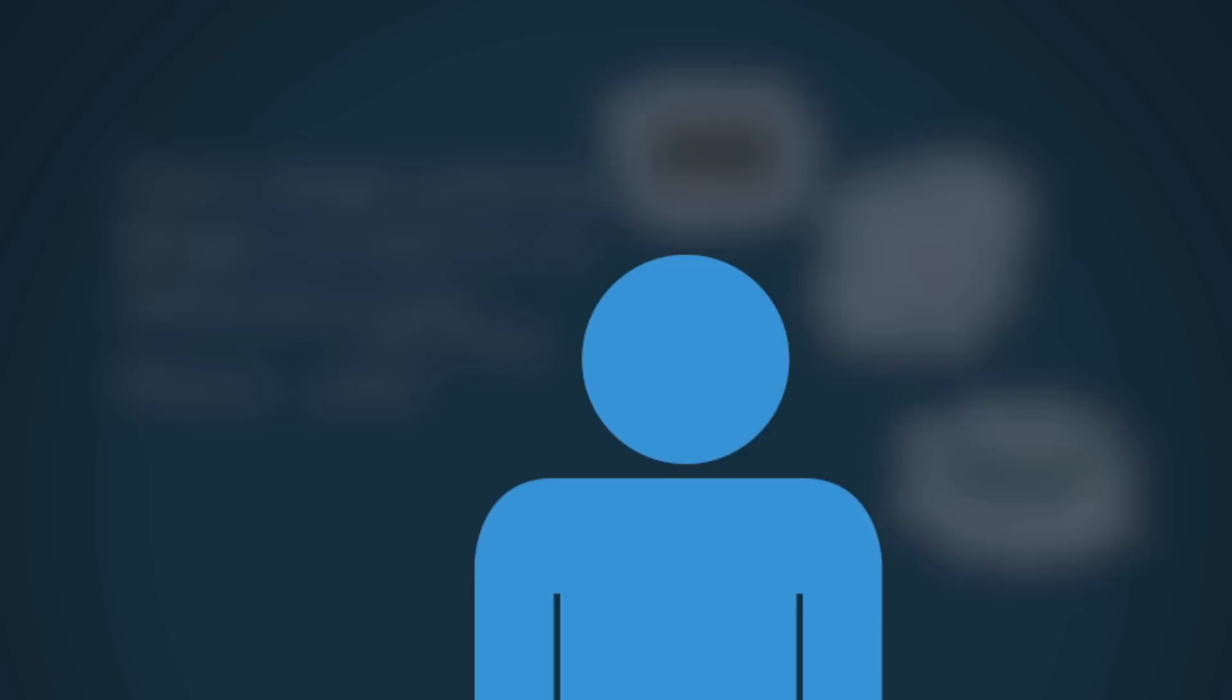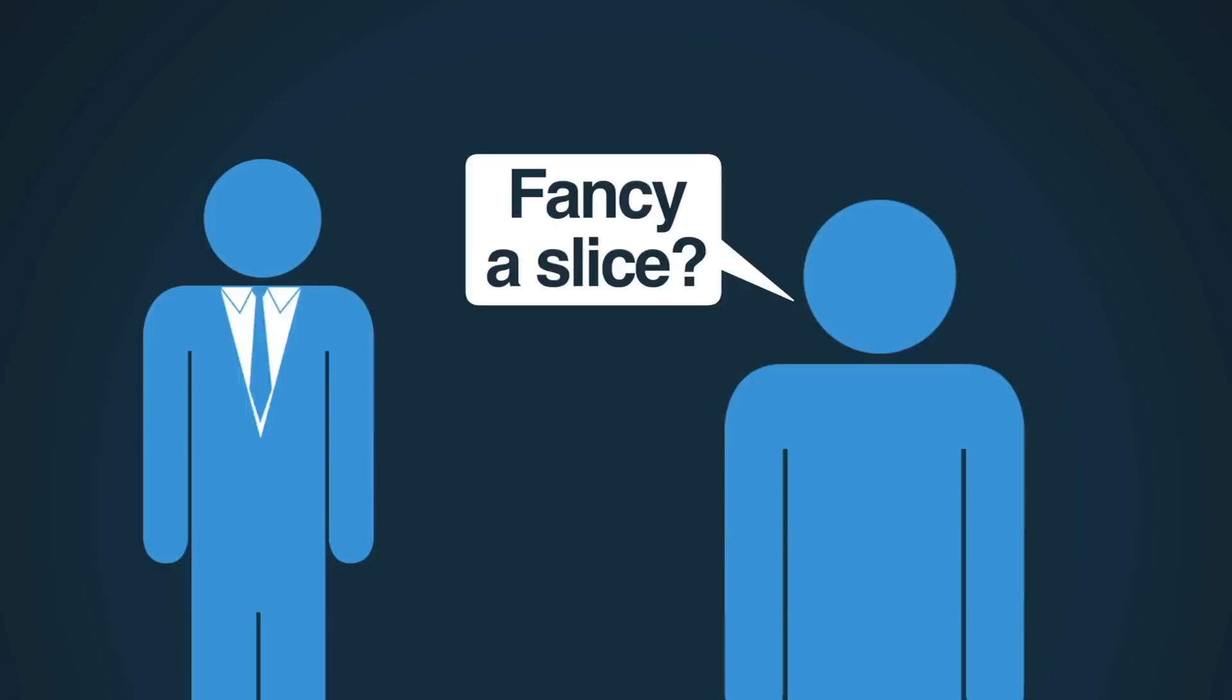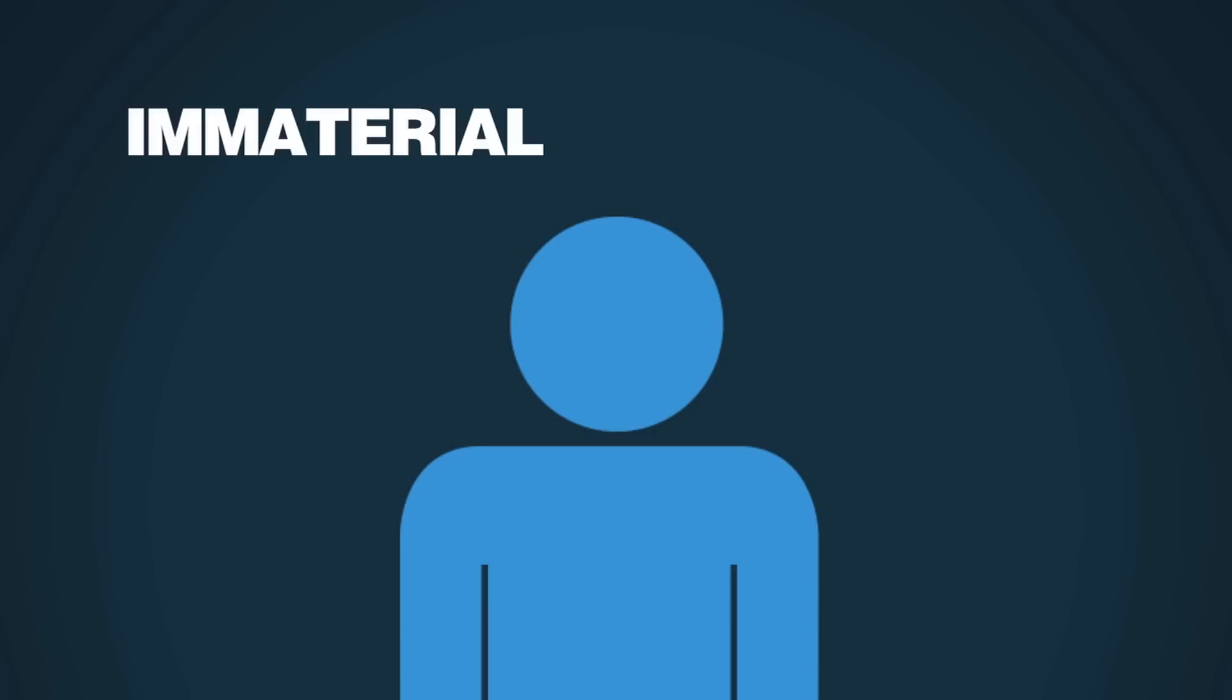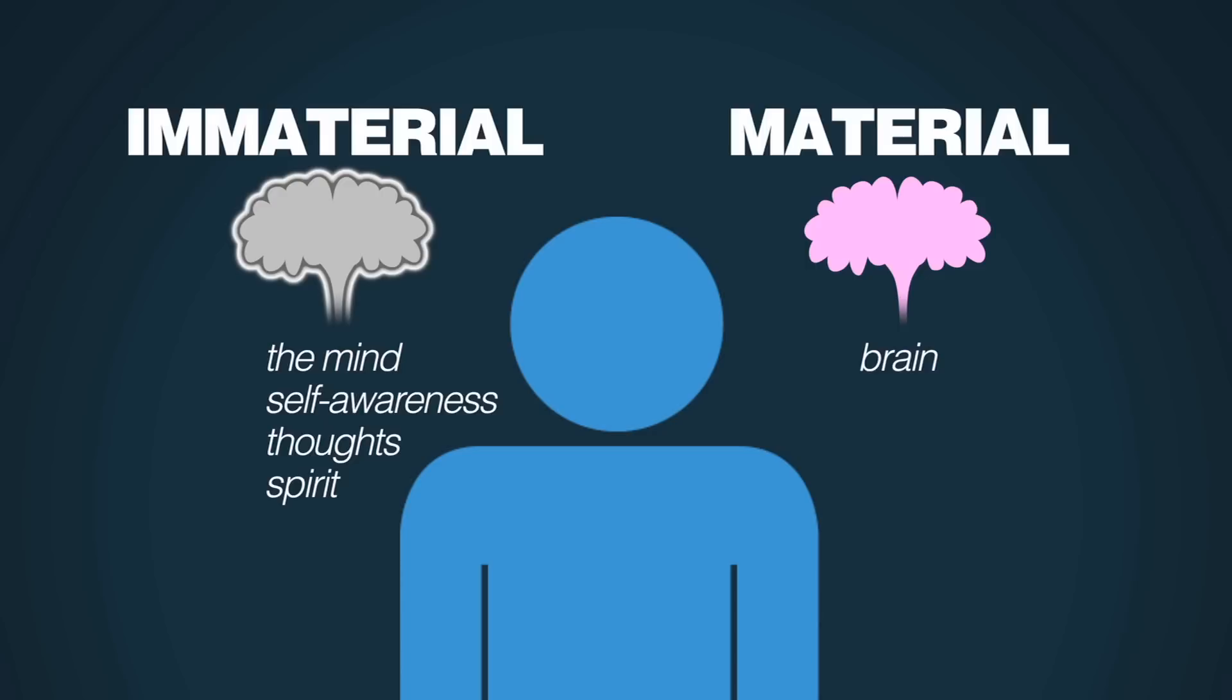So what we have here, therefore, are two different types of things. An immaterial mind and the material brain. You are the thing that has the brain, you are not your brain.